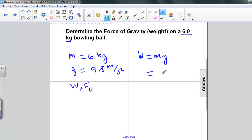And making substitutions for each of the quantities, I've got six times 9.8. So this is six kilograms and 9.8 meters per second squared. And my total is going to be 58.8. So weight is 58.8 newtons.